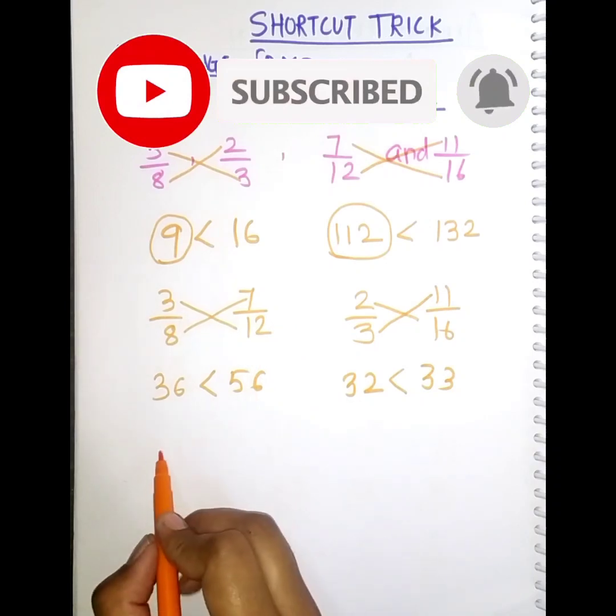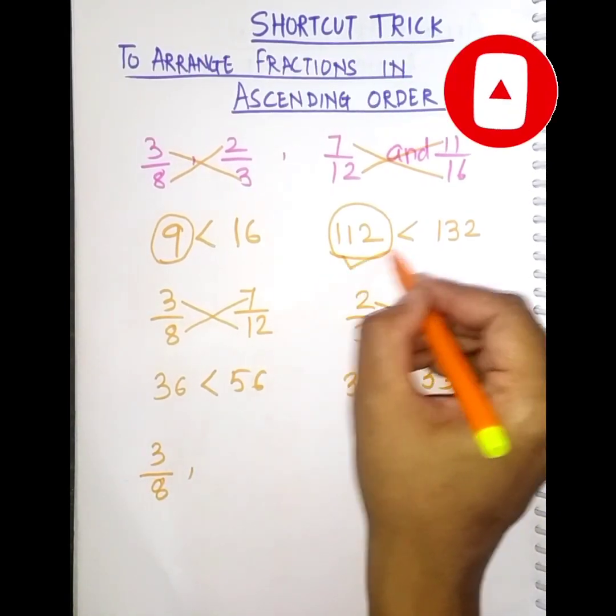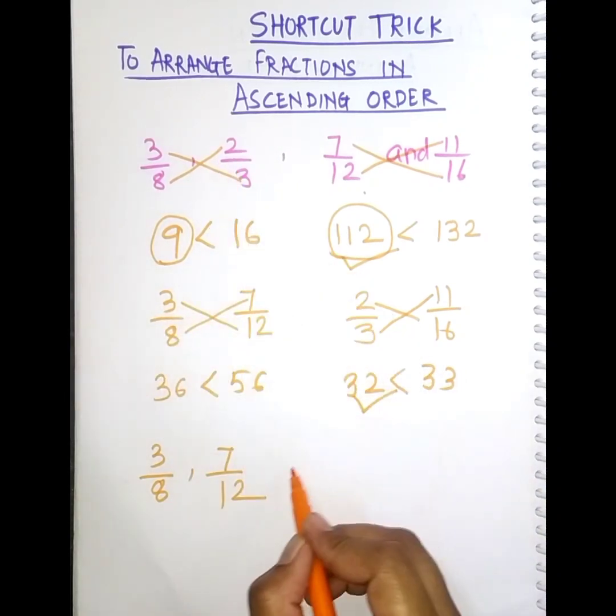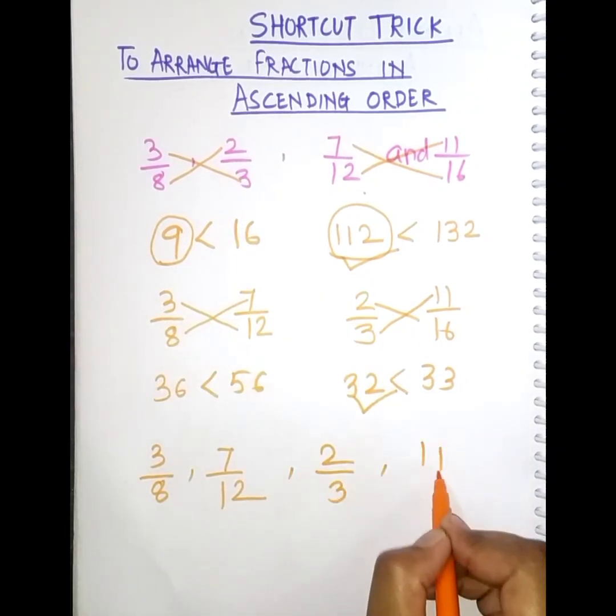So first smallest number will be 3 by 8. Then next one is 7 by 12. Then next smallest is 2 by 3. And the last one will be 11 by 16.